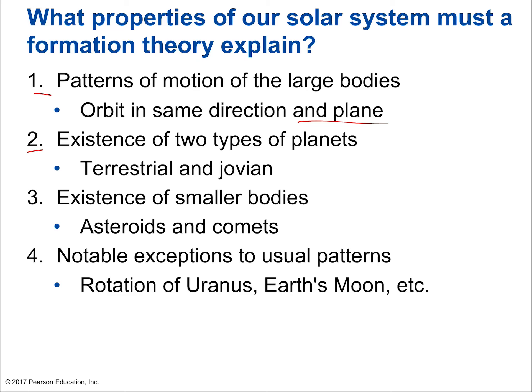Number two: we have to explain the existence of two types of planets — why some are rocky with metals and dense materials, while the Jovian planets are mostly gas and much bigger. Number three: why are there smaller bodies? Why is our solar system populated by millions of asteroids and tens of millions of comets on the outer edges? Finally, we must explain the exceptions — strange phenomena like Uranus's 90-degree tilt and Earth's large moon.